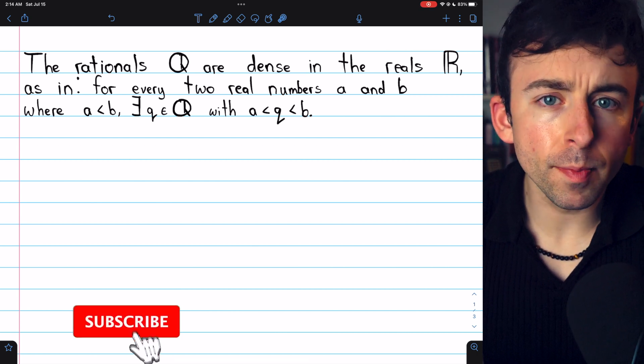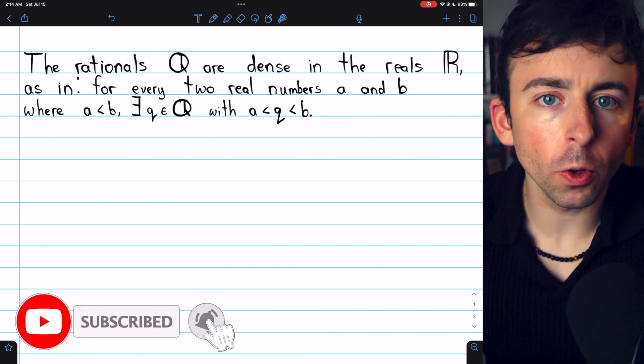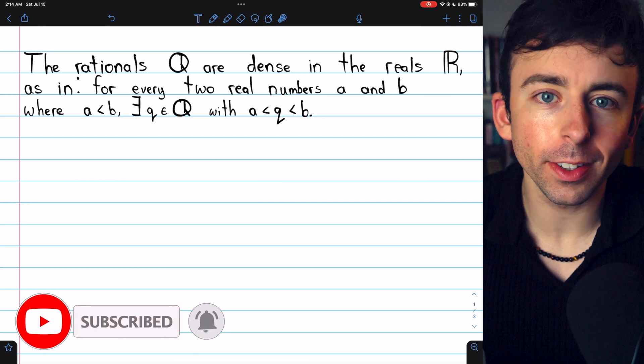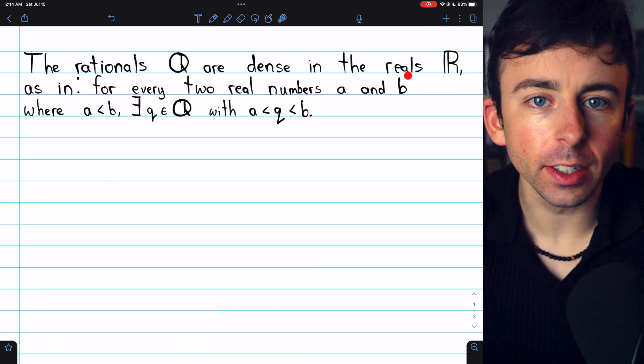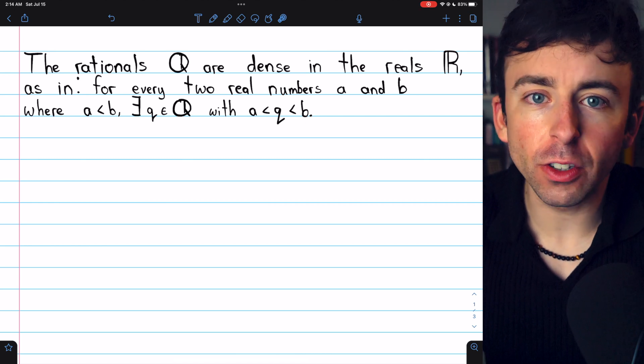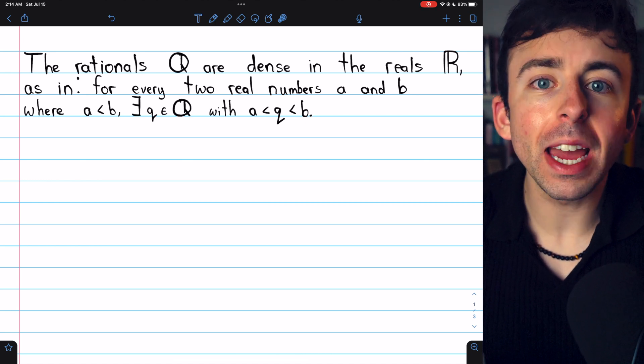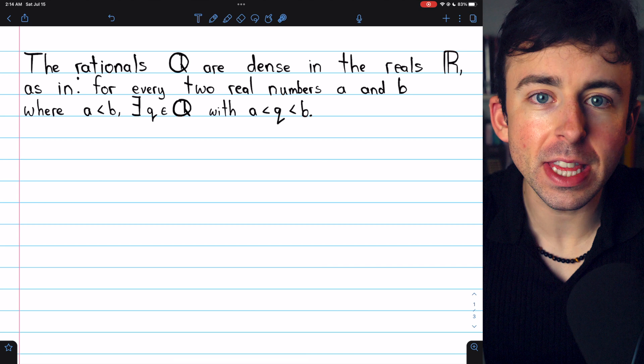An interesting and important property about how the rational numbers relate to the reals is that the rationals are dense in the reals. This means given any two real numbers, there will be a rational number between them.